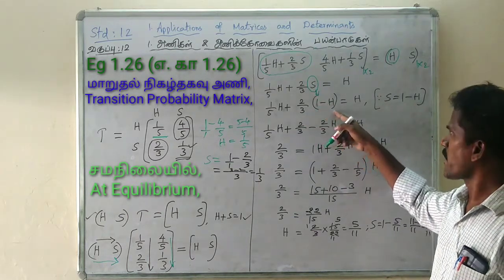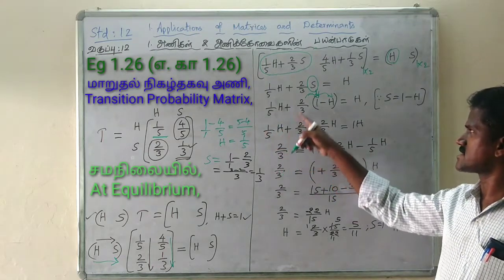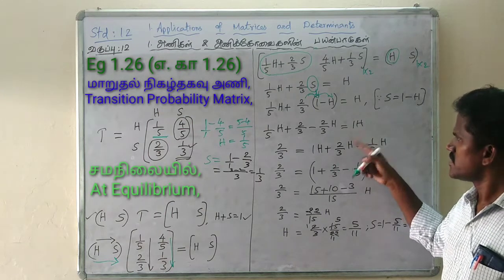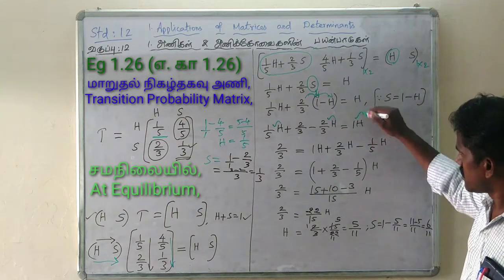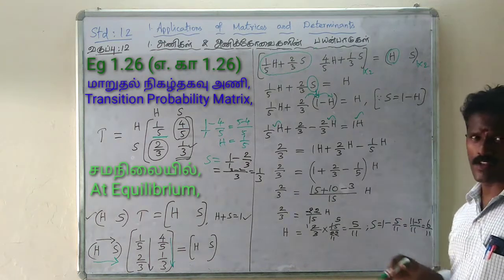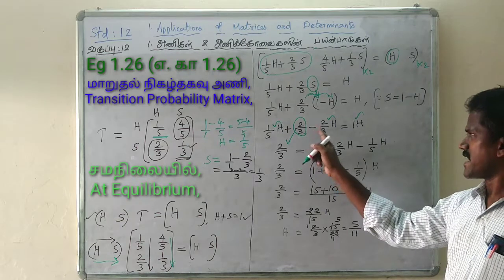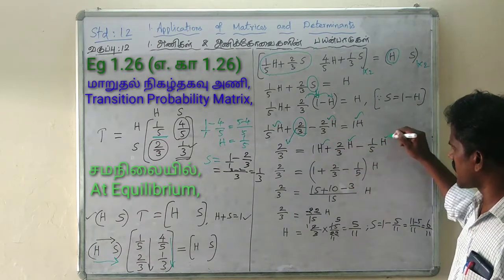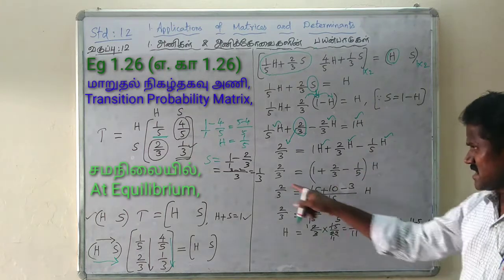Equal to 1 H. So here: 1 by 5 H minus H, and minus 2 by 3 H, and 1 H in 3 times — equalization. Right hand: 2 by 3, 2 by 3 — equalization right hand: minus 2 by 3 H plus 2 by 3 H, 1 by 5 H minus 1 by 5 H — all H.